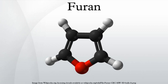Industrially, furan is manufactured by the palladium-catalyzed decarbonylation of furfural, or by the copper-catalyzed oxidation of 1,3-butadiene. In the laboratory, furan can be obtained from furfural by oxidation to furan-2-carboxylic acid, followed by decarboxylation.